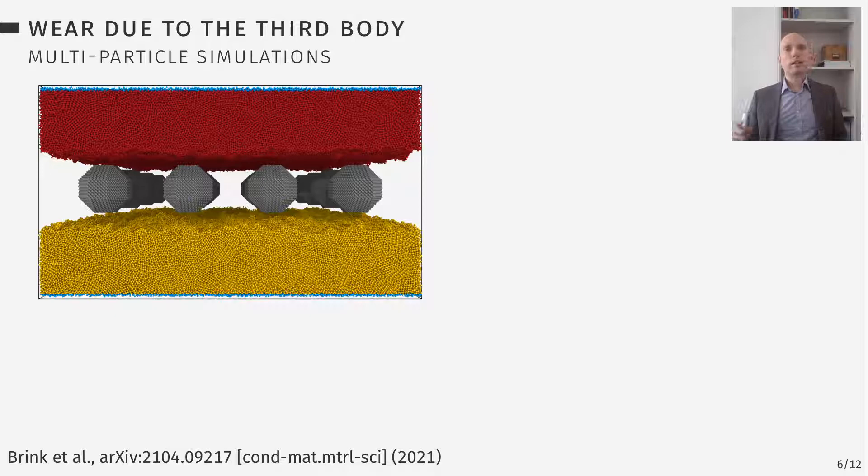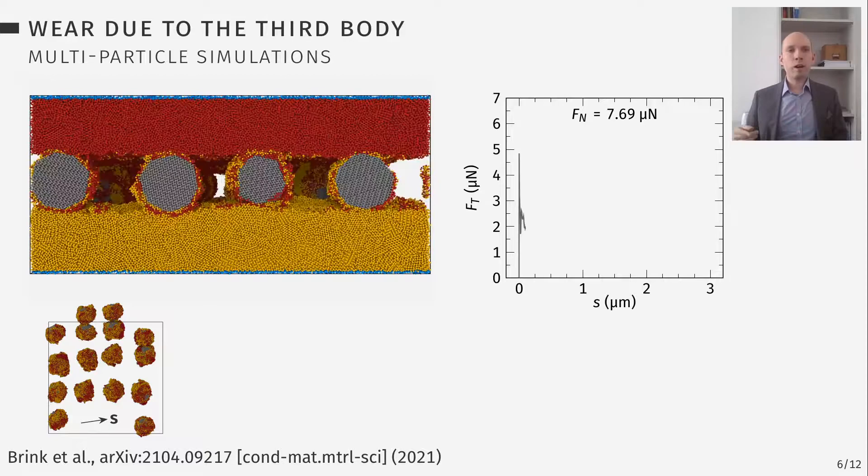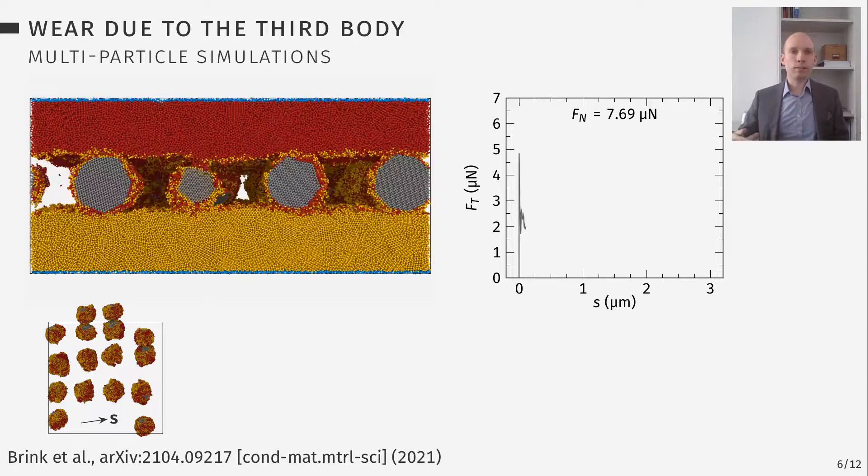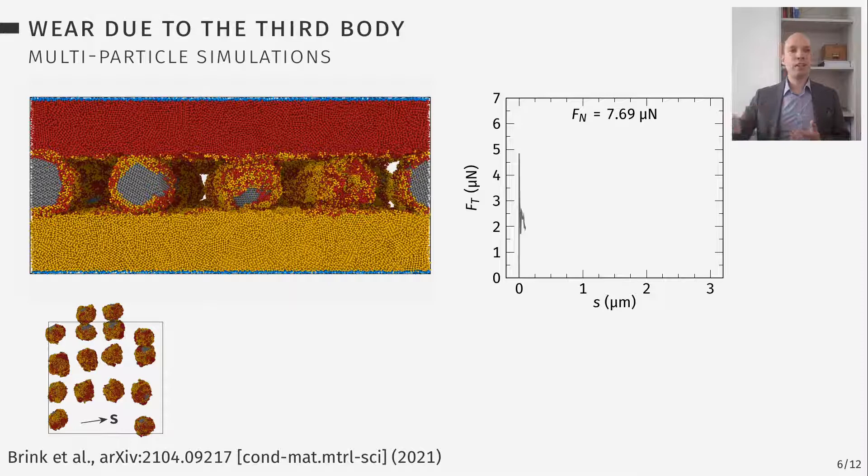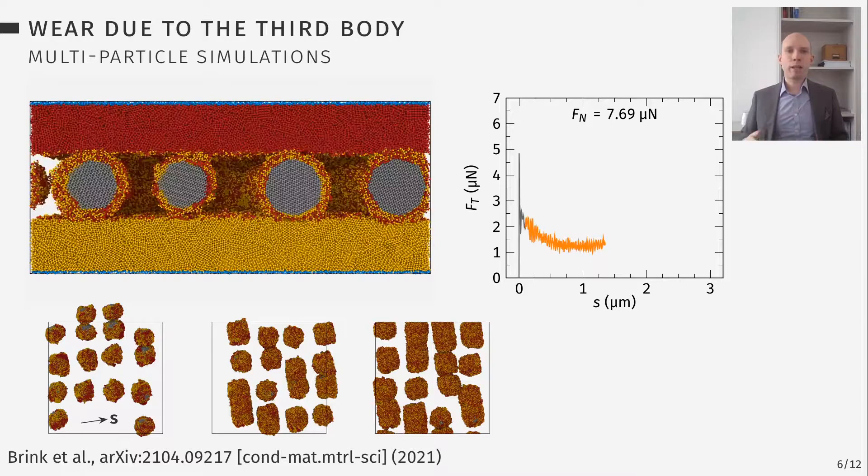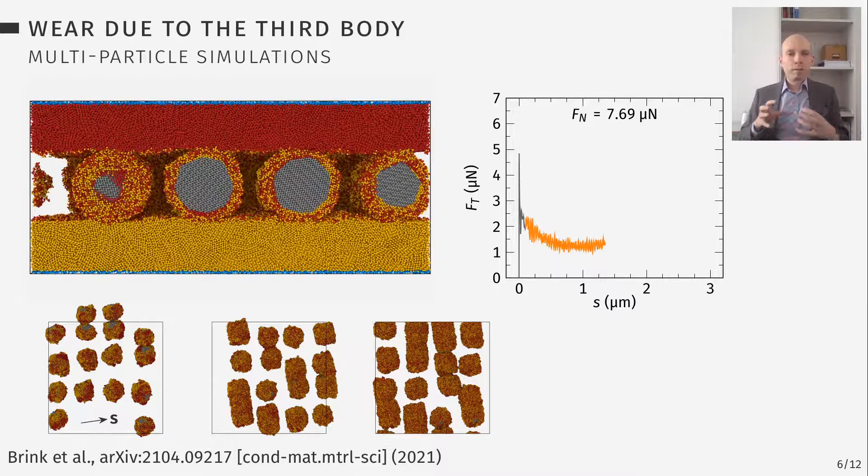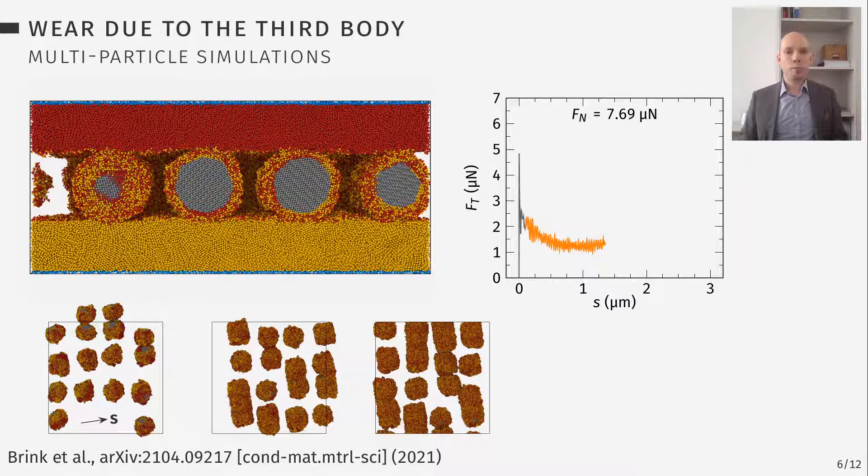Here we started with 16 rigid particles, applied a normal load and started sliding as you can see in the video. What you can also see in the video is that these particles keep rolling and they pick up volume from the surfaces and they are coated with this volume. Since they are not embedded into one of the surfaces and since they are not really scratching, we say this is more of an adhesive wear despite the particles being rigid. While the particles continue rolling, they keep picking up volume as expected. We have a relatively low frictional force and they grow mostly lateral to the sliding direction.